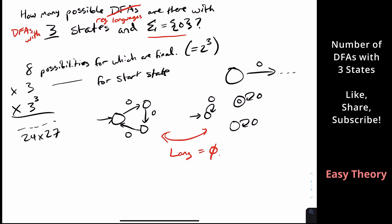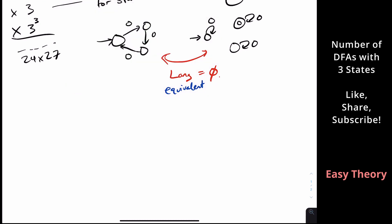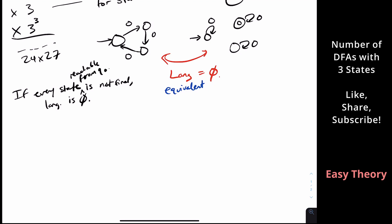So these two would be considered equivalent. We'll call DFAs equivalent if they have the same language. We can note right off the bat that if every state reachable from q0 is not final, then the language must be empty. So we're going to now assume that some final state is reachable from the start state q0.